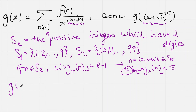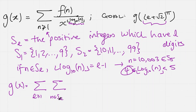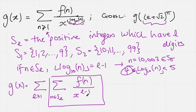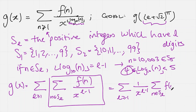So if I go back to g of x, I can now split this sum as the sum over l greater than or equal to 1 of the sum of n in sl — because for different values of l, sl partitions the positive integers. I can write this as a double sum of f of n divided by x to the floor of log base 10 of n. But we know the floor of log base 10 of n is just l minus 1. Since 1 over x to the l minus 1 is a constant within the inner sum, I can bring it out: g of x equals the sum over l of 1 over x to the l minus 1, times the sum of n in sl of f of n.